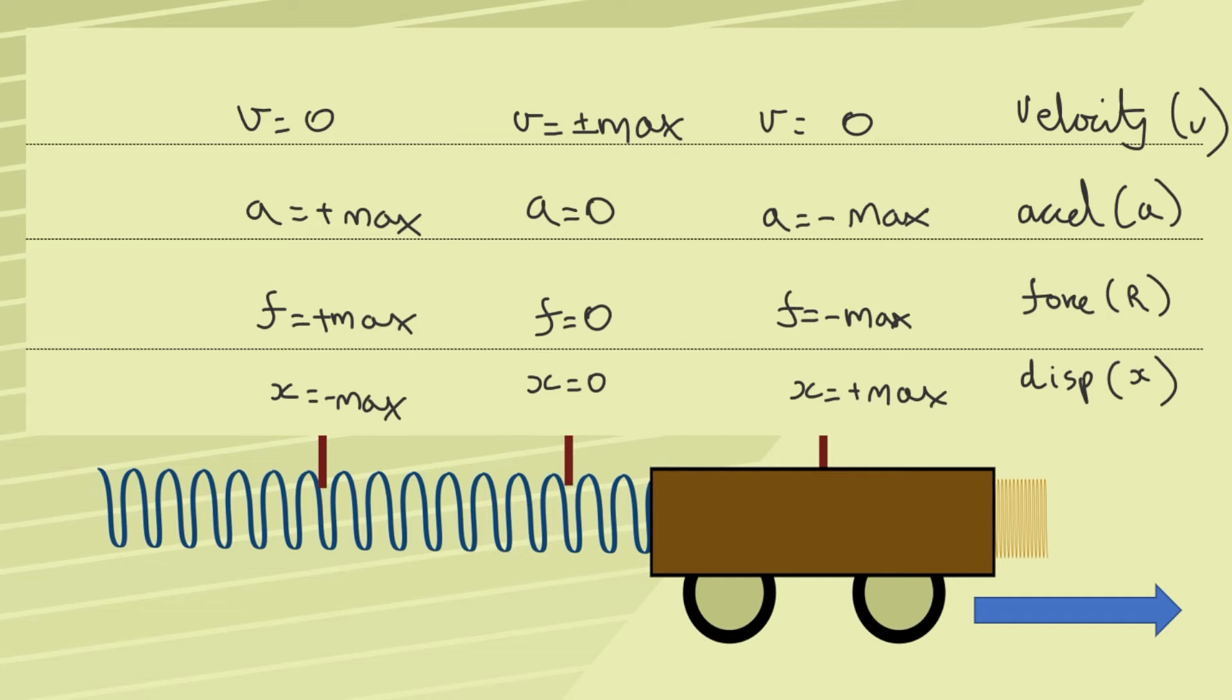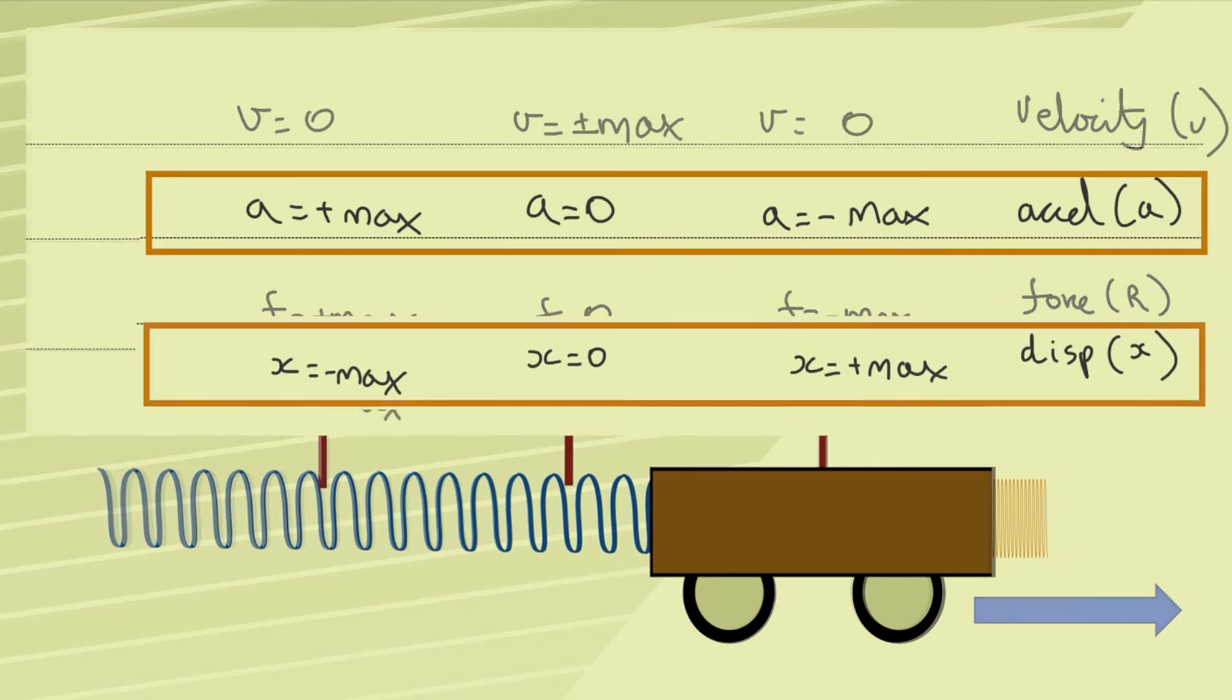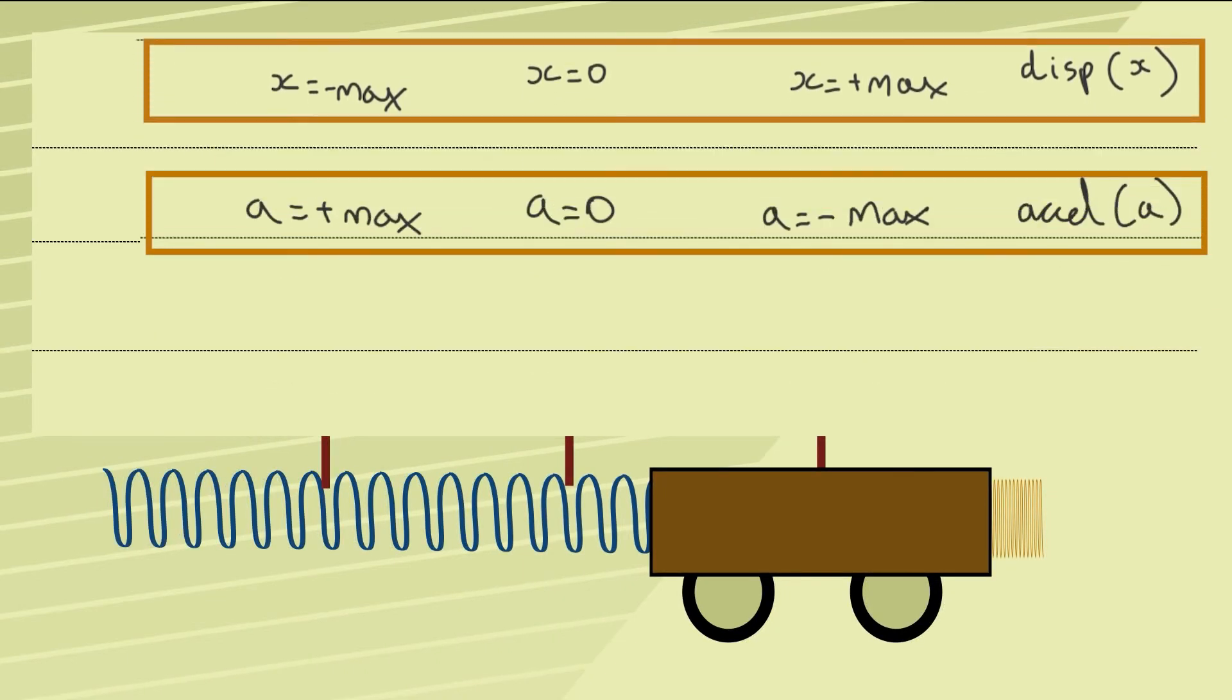This table shows us standard values for X, F, A and V for a simple harmonic oscillator. But I'm going to draw your attention particularly to the acceleration and the displacement. Bearing in mind that what we're trying to do is define simple harmonic motion, which basically means come up with a mathematical expression to describe its velocity, acceleration and so forth at any point along its journey.